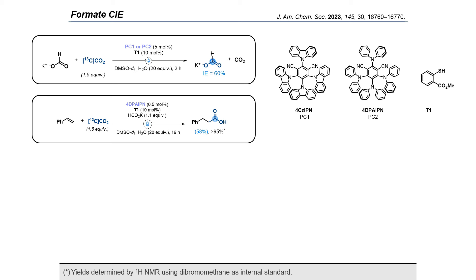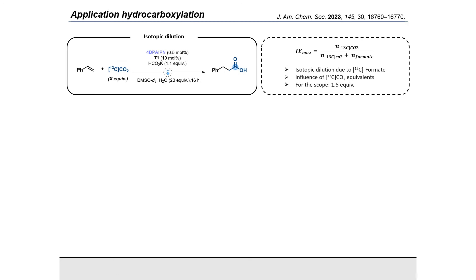Once this was done, we also confirmed that the use of this radical anion was suitable for late-stage carboxylation. Once optimized, we achieved to lower the catalytic charge to 0.5 mol percent and using 1.5 equivalents of carbon dioxide. Furthermore, enrichments were all close to the maximum isotopic enrichment we could get.